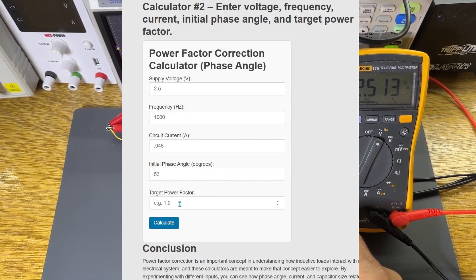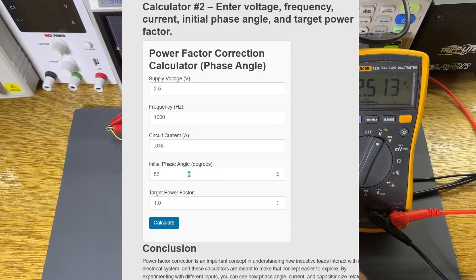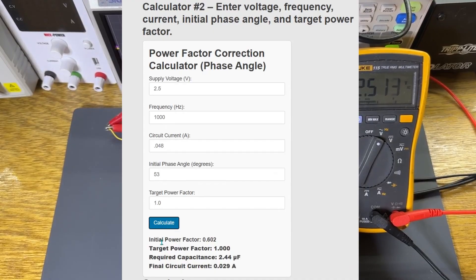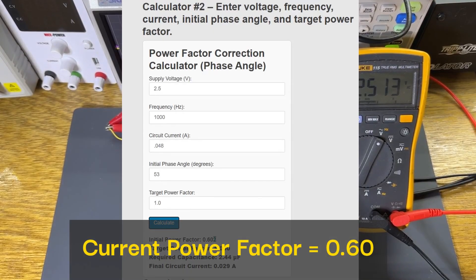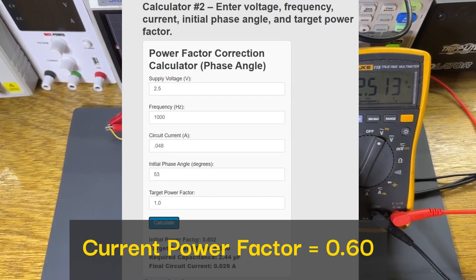And our target power factor, of course, we want that to be 1.0, which is perfect. So here's the output of our calculator, which indicates that our power factor is 0.60, which means we're only using 60 percent of the power that we're pulling from the supply effectively.